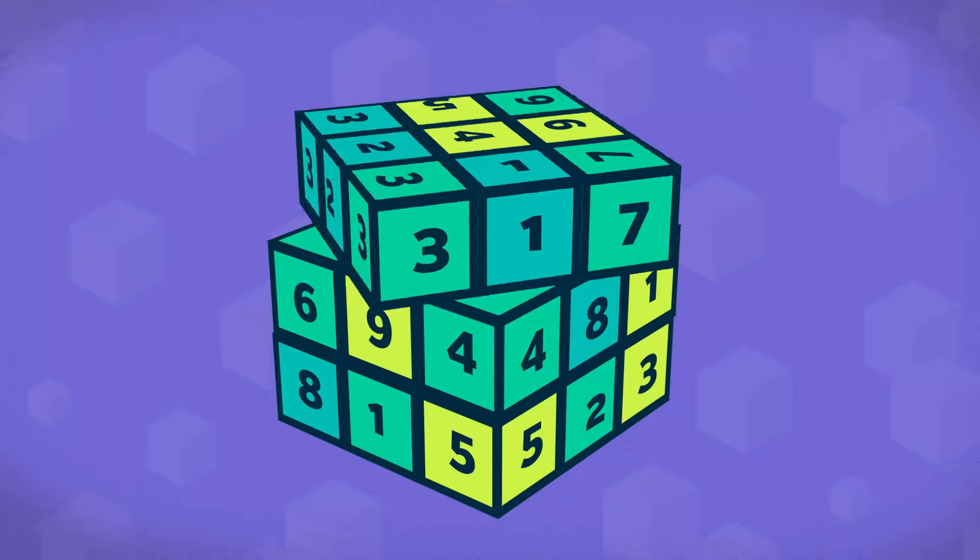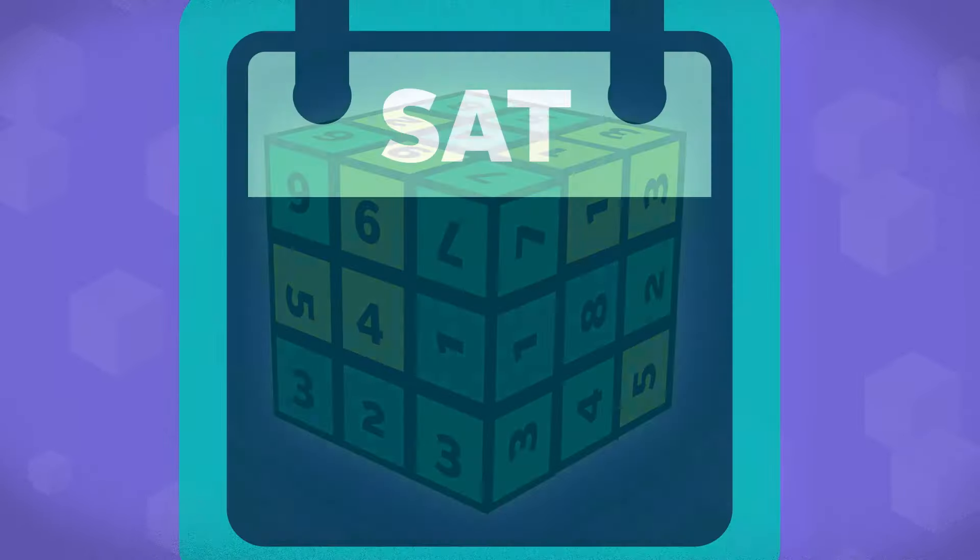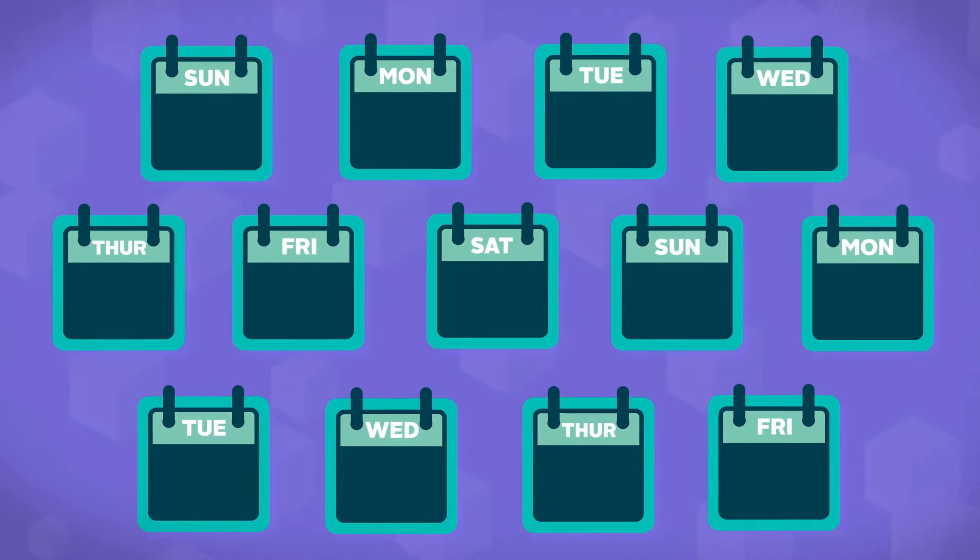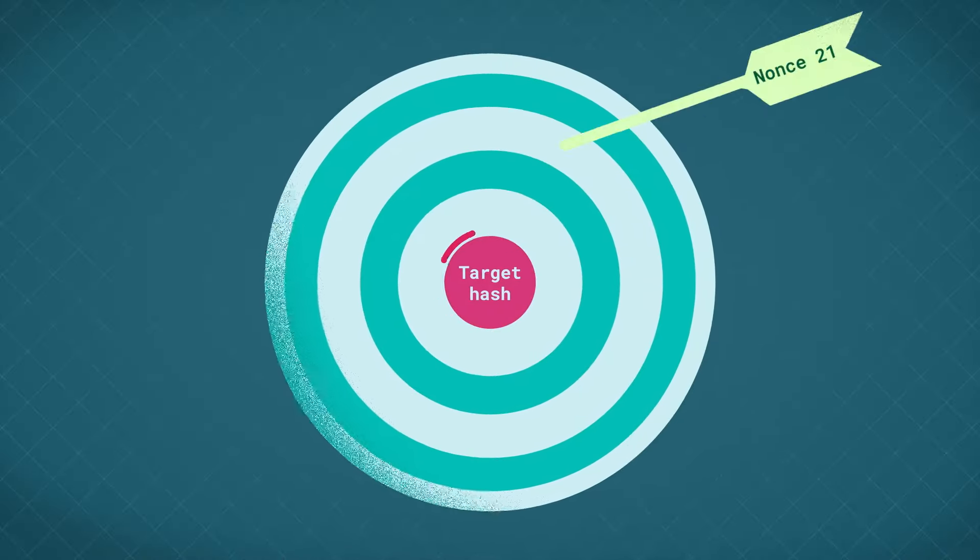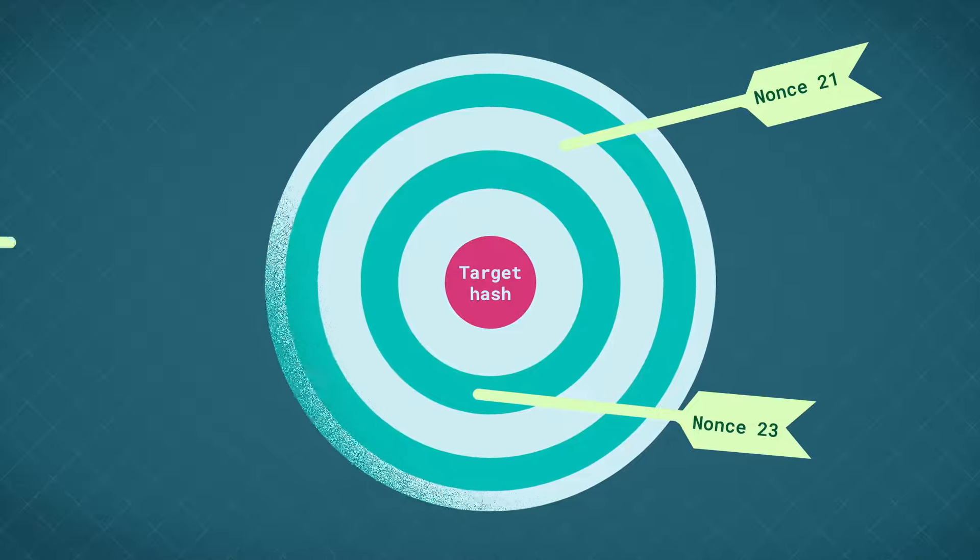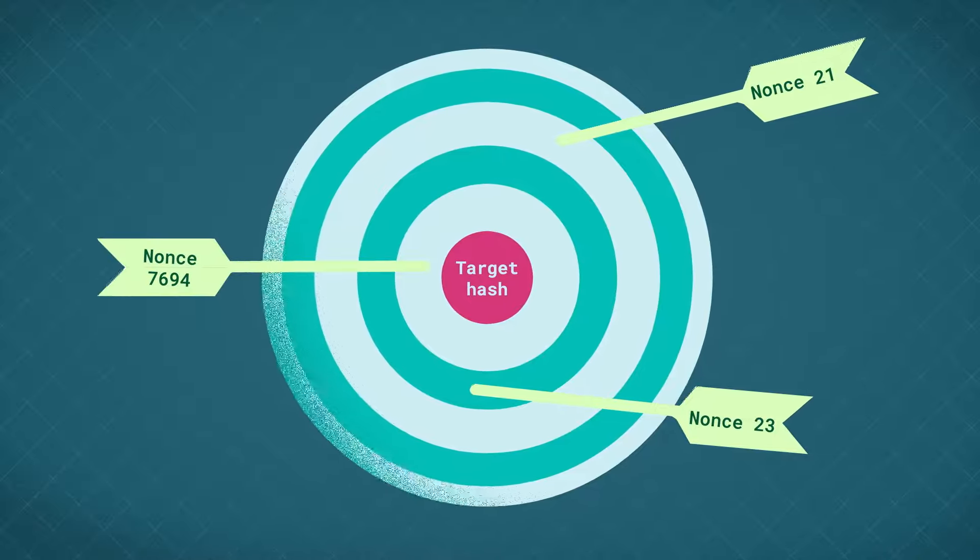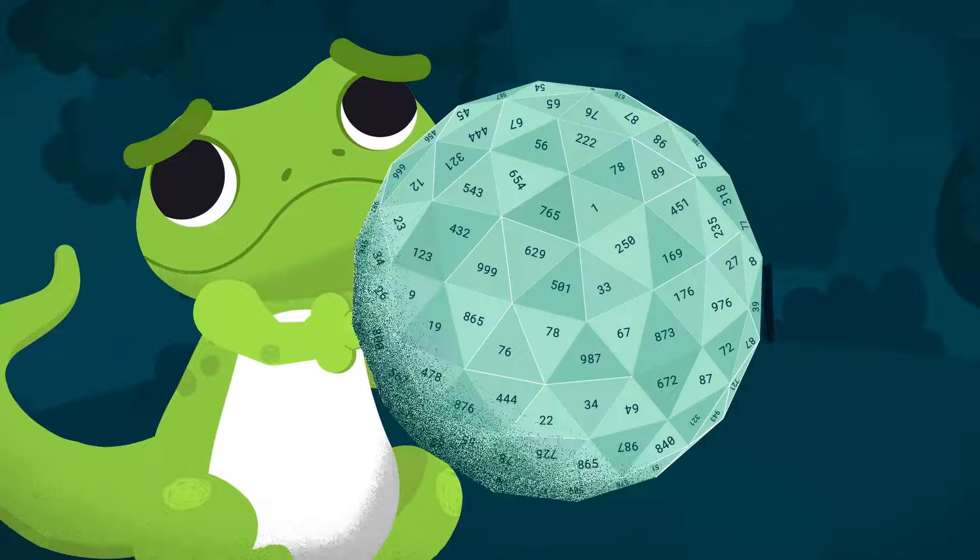So why is it so difficult to guess the correct nonce? Well, the thing is that roughly every two weeks, the Bitcoin network sets a target hash and will only accept output hashes that are equal to or smaller in value than the target hash.